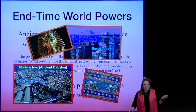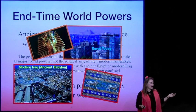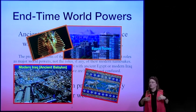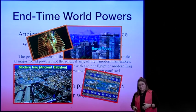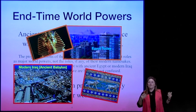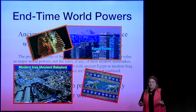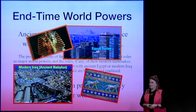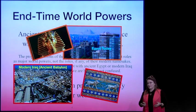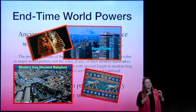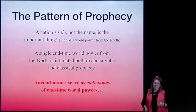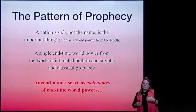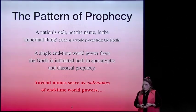This is Egypt today, and this is modern Iraq today. And while, because Hebrew prophecy is multidimensional and on many levels, there might be some geographical explanations today—that's not the type that the prophets were using. A nation's role, not the name, is the important thing.